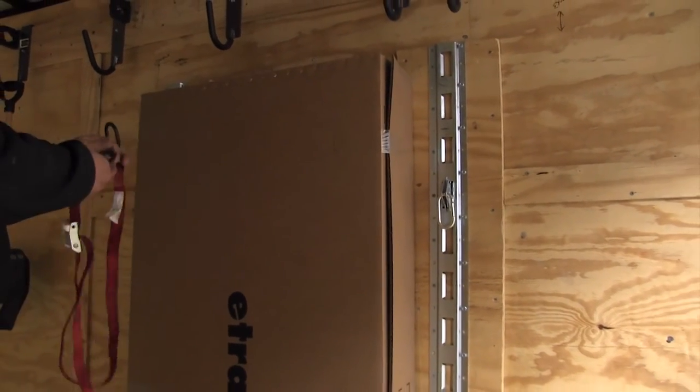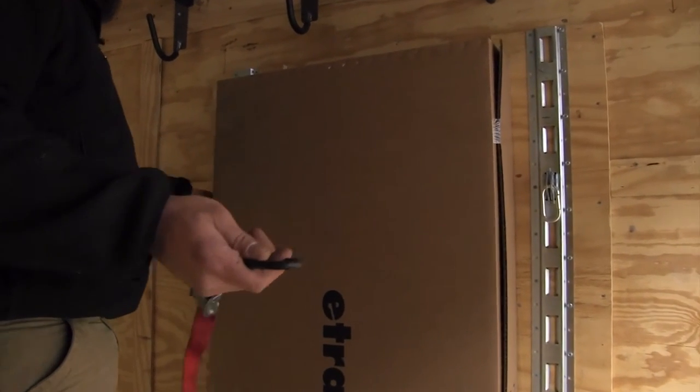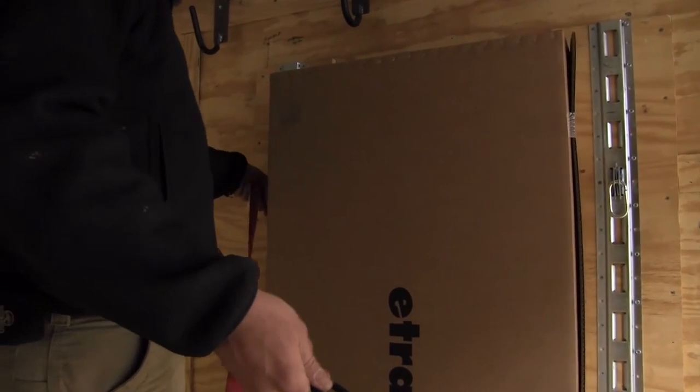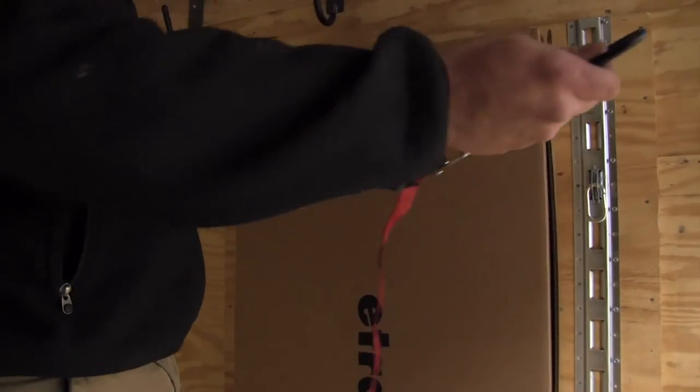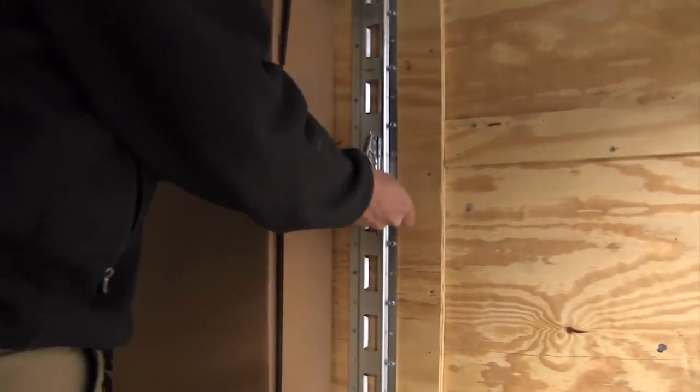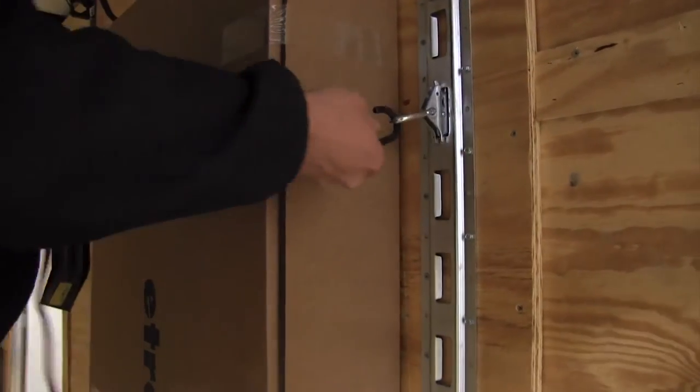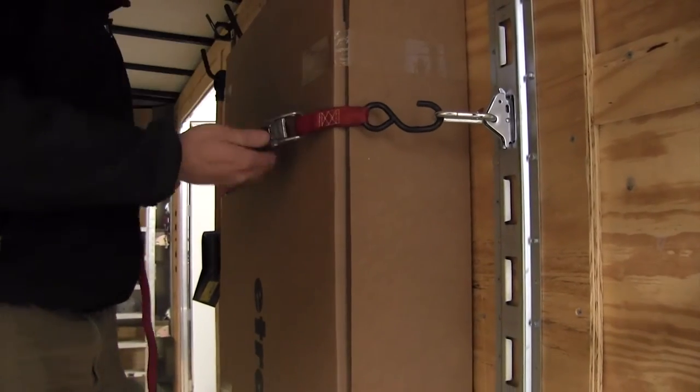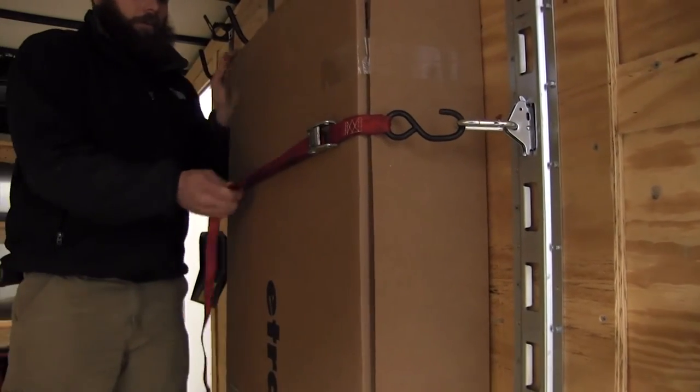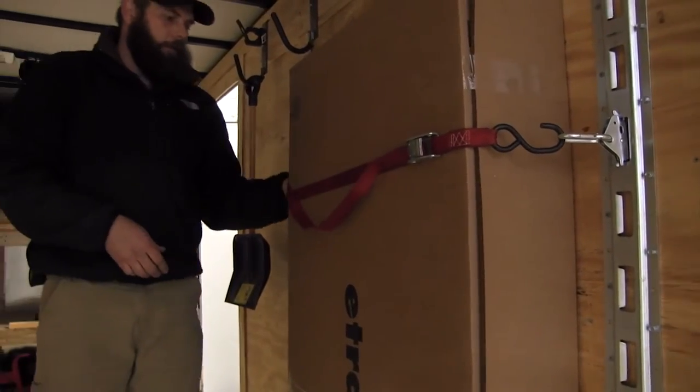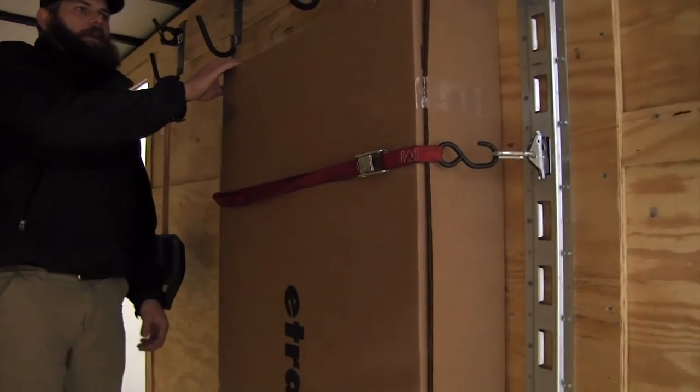Now we've already got one here on the other side of the box, just want to show you quickly how these are going to work to secure. We'll make that connection, bring it right around here, connect into our carabiner, and then just pull it tight to secure whatever cargo it is that we need to keep up and off the floor or nice and secure.